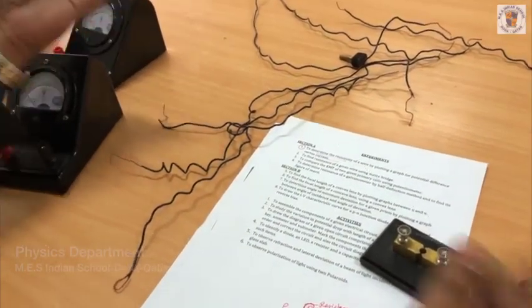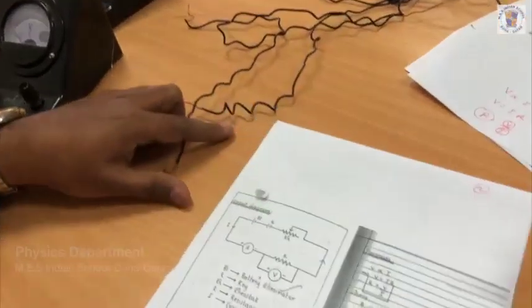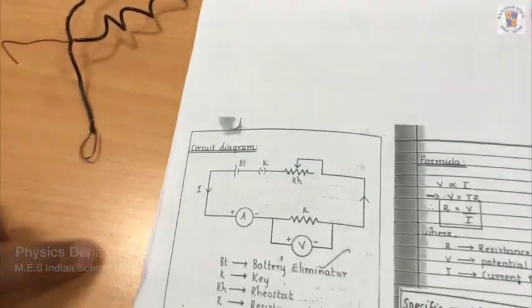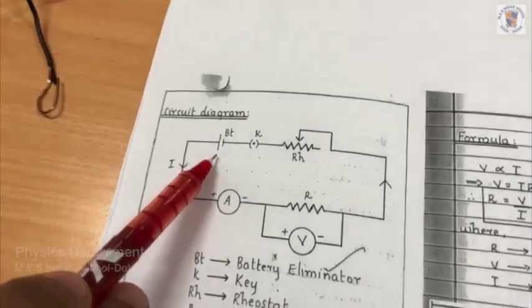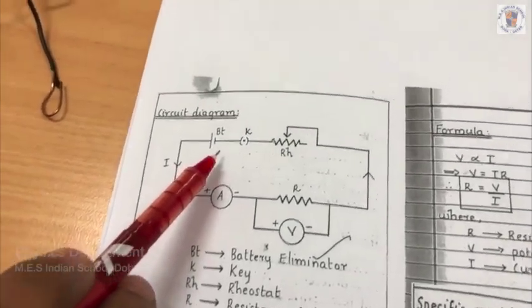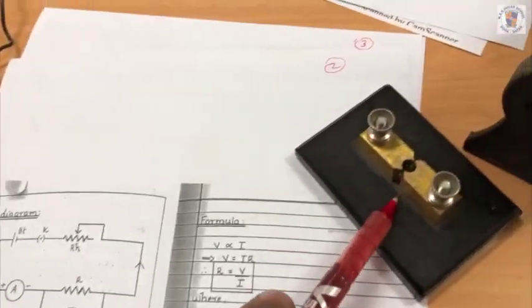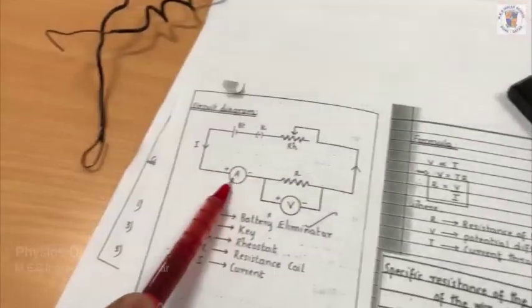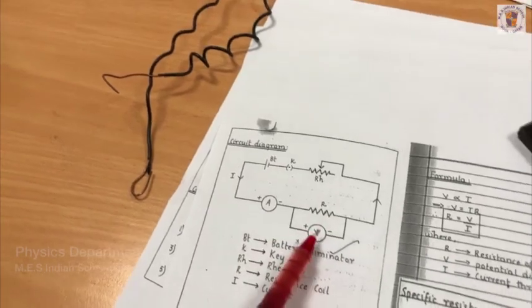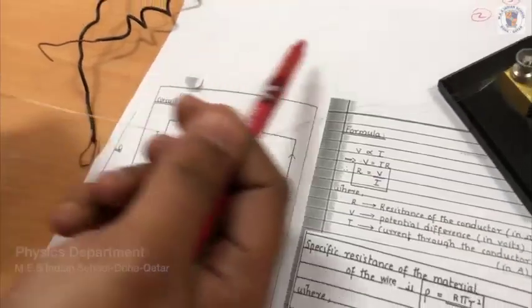To find the resistance, we use the Ohm's law circuit. In this circuit, there is the battery — which is the eliminator — the key, the rheostat, the ammeter, the voltmeter, and the resistance wire. Our aim is to find the resistivity of this wire.